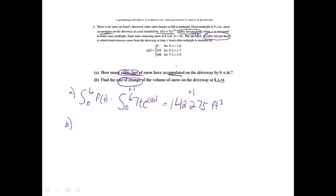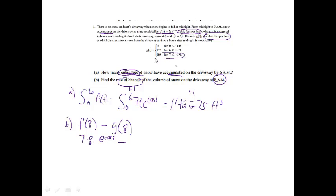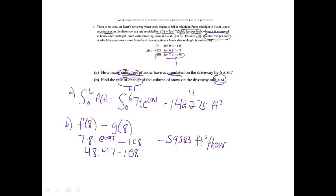Since these are already rates, to find how the snow volume is changing at t equals 8, I just need f(8) minus g(8): how much snow is going onto the driveway minus how much Janet is removing. f(8) equals 7 times 8 times e to the cosine 8, which gives 48.417. Since 8 falls between 7 and 9, g(8) equals 108. So the answer is 48.417 minus 108, which equals negative 59.583 cubic feet per hour. That part was worth one point.